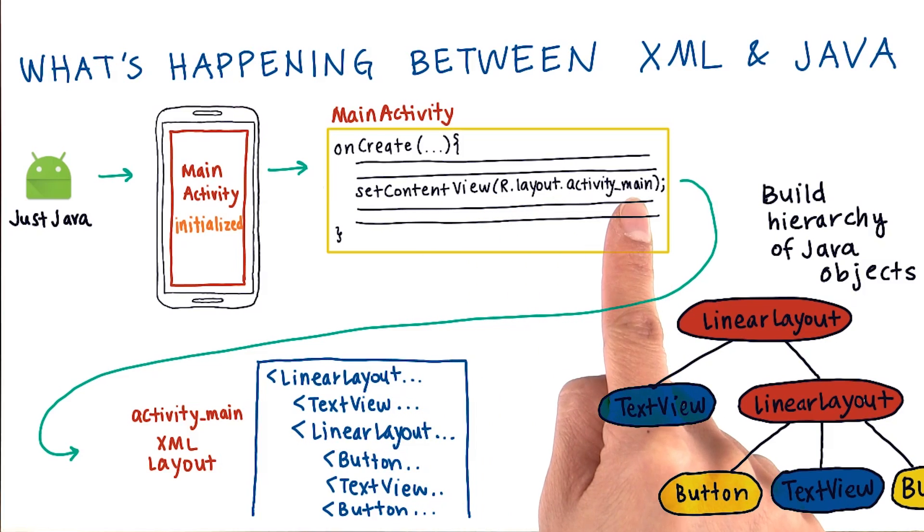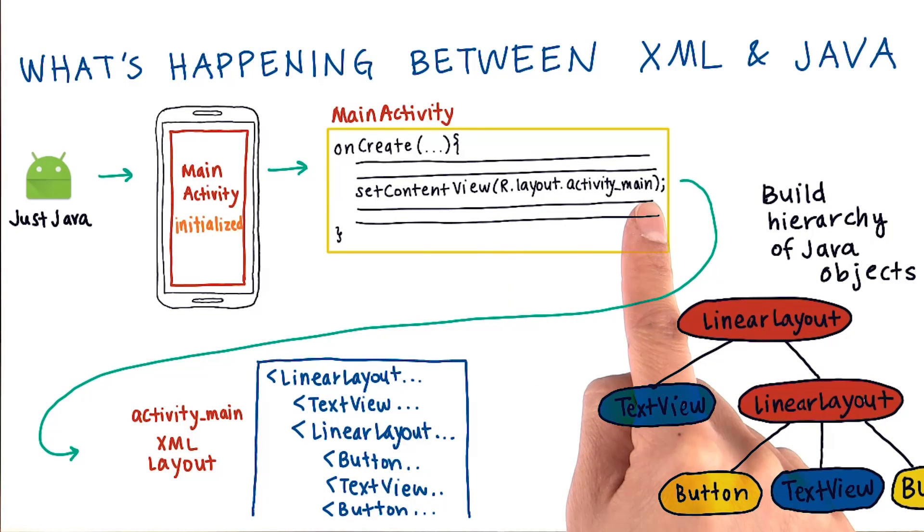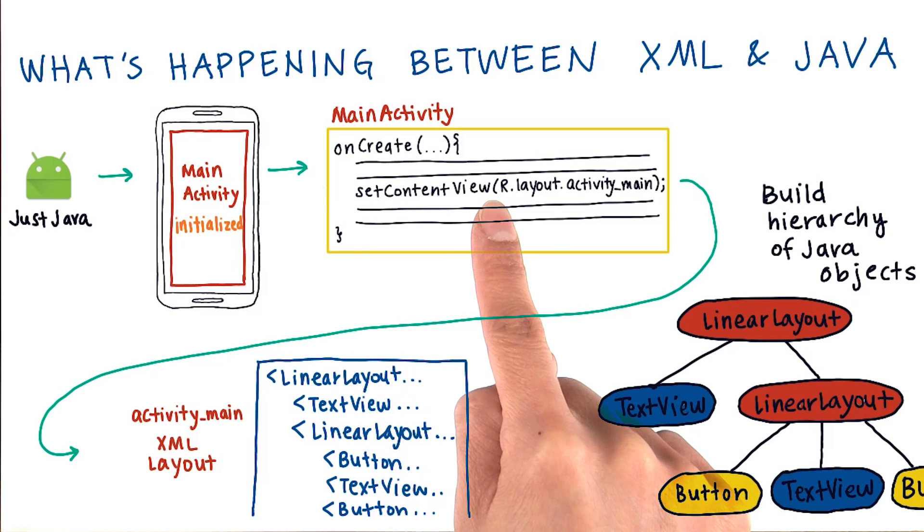In an earlier exercise, we passed in a single text view for setContentView. But we want more than one view for our app, so we pass in a layout resource ID. This maps to an XML file. Once we set the content view, the activity goes and finds the XML layout file and then reads through each line.